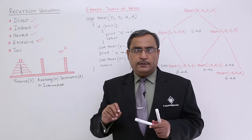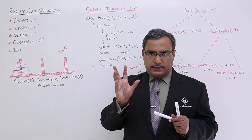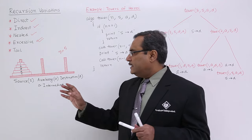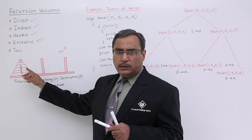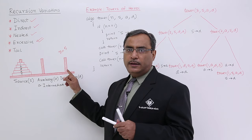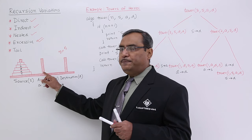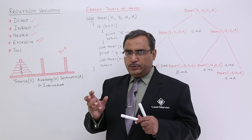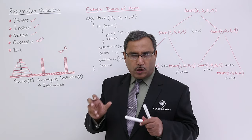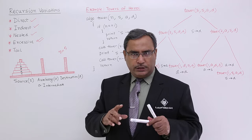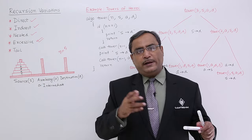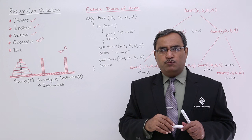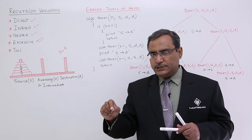The condition is that we cannot place a larger disk on a smaller disk. The target is to move all the disks from the source peg to the destination peg using the auxiliary peg as intermediate, with two conditions: condition 1 — a disk with a larger radius cannot be placed on a disk with a smaller radius; condition 2 — only one disk can be moved at a time from one peg to another.